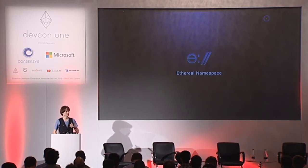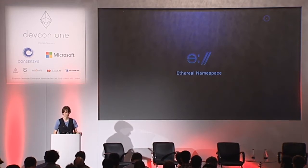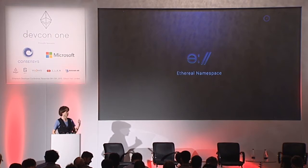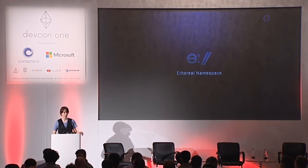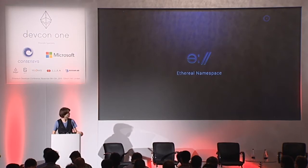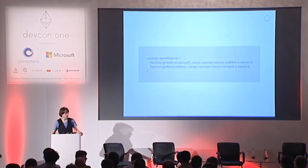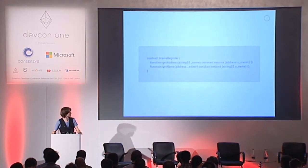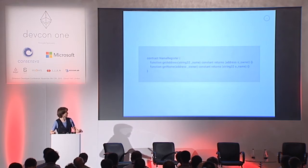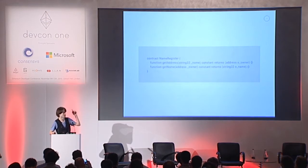To accomplish that goal, we came up with a system of smart contracts that we call the ethereal namespace. Essentially, it's a hierarchical, permissionable name registry. This is the name reg interface as it stands, and it allows you to map addresses to names and names to addresses.